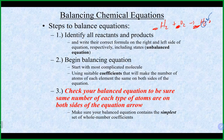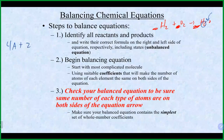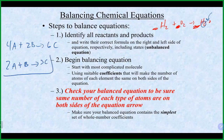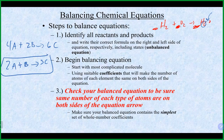A properly balanced equation requires two things: all coefficients must be whole numbers, and they must be the simplest set of whole numbers. If you have a balanced equation where all coefficients can be divided by a common factor and still give whole numbers, you must reduce them. For example, if you could divide all coefficients by two and still have whole numbers, that gives the properly balanced equation.